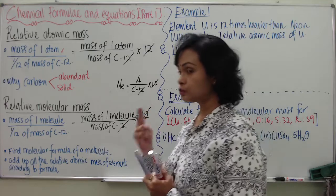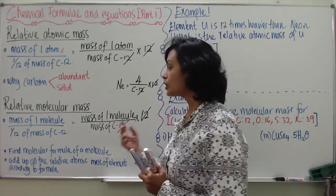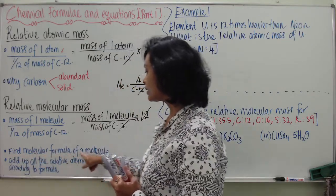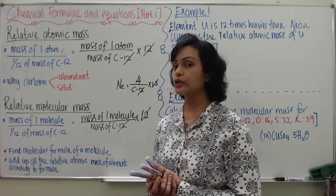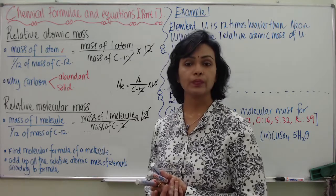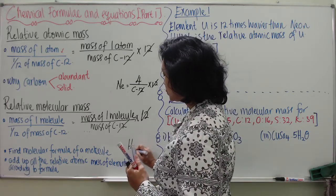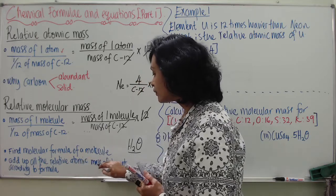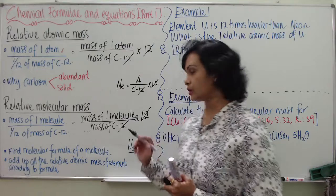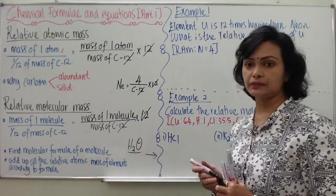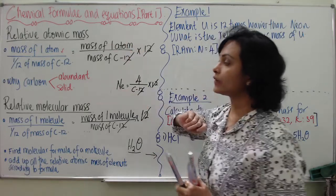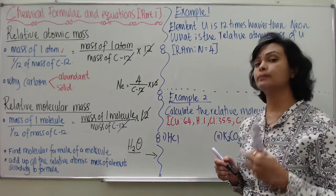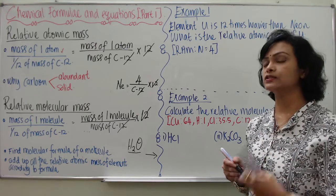There are two steps to find the relative molecular mass. Step one: find the molecular formula of the molecule — for instance, water has the molecular formula H₂O. Step two: determine the correct molecular formula and add up all the relative atomic masses of all the elements according to the formula. Teacher will show this with examples.